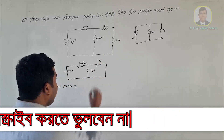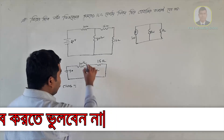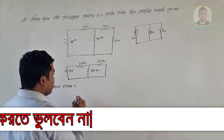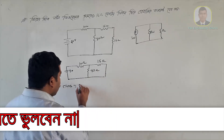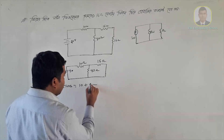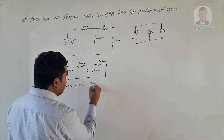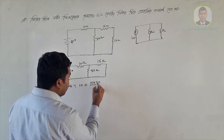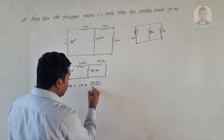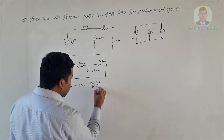This is 10, plus 1, plus the value 1 to 3, and this is the value 2 to 3.